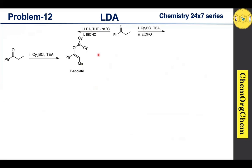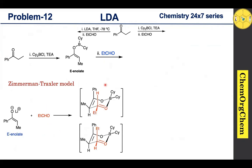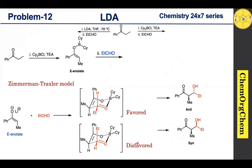Once we obtain the E-boron enolate, it readily undergoes cross aldol reaction with propanaldehyde. We can again explain the selectivity using the Zimmermann-Traxler model: E-enolate interacts with propanaldehyde via a cyclic six-membered chair-like transition state. The arrangements are the same as before — the difference is only how propanaldehyde approaches the enolate ion. The first transition state has minimal 1,3-diaxial interaction between phenyl and hydrogen, making it the favored transition state. The second has strong 1,3-diaxial interaction between phenyl and ethyl, making it disfavored. The favored transition state produces the anti-aldol product, while the disfavored produces the syn-aldol product.